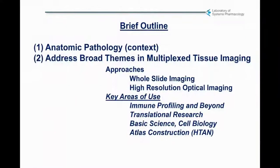A brief outline: I'll first give some context about anatomic pathology, then address some broad themes in multiplexed tissue imaging, focusing on approaches as well as key areas of use — in particular immune profiling, but also translational research, basic science, some cell biology, and finally atlas construction.